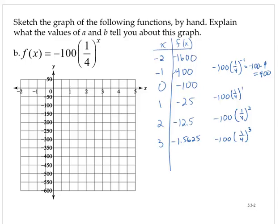So plotting the points that we can. Again, negative 1, negative 400; 0, negative 100; 1, 25; 2, negative 12.5.